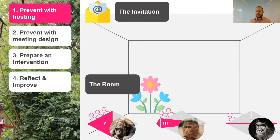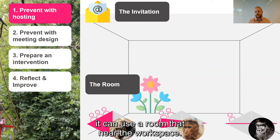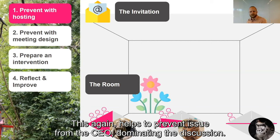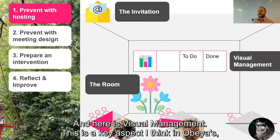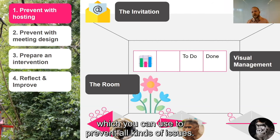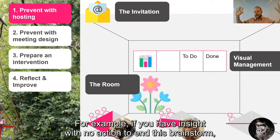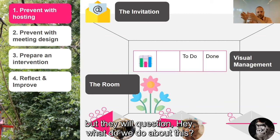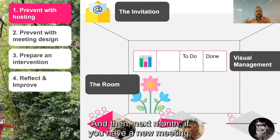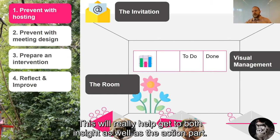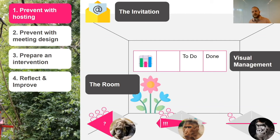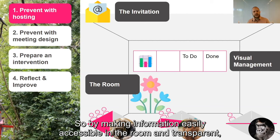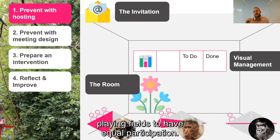The second thing we can use is the room. Instead of a fancy off-site location, use a room that's near the workspace — accessible, where people feel safe and easy to speak up. This helps prevent the CEO from dominating the discussion. And here's visual management, a key aspect of Obeya which we can use to prevent all kinds of issues. For example, if you have insight with no action — the endless brainstorm — you can add a to-do and done section. Then automatically people will not only look at insights but will ask, what do we do about this? And next month they'll ask, is this done? This helps get to both insight and action. For the dominating person, information is key — making information easily accessible and transparent means no information disadvantage, and more equal participation.